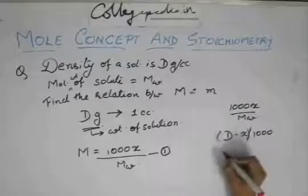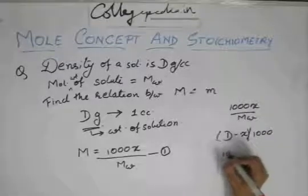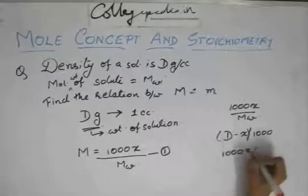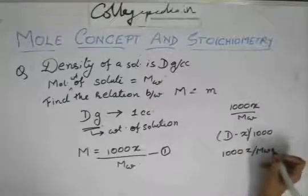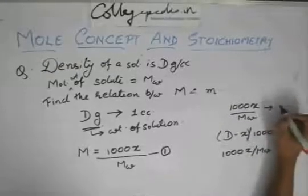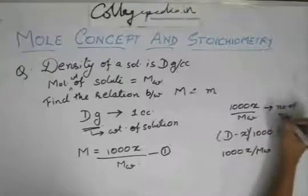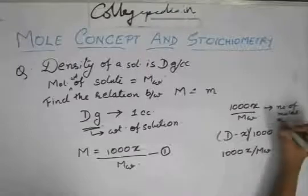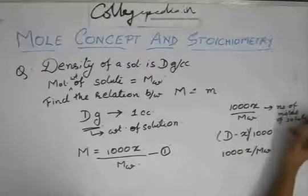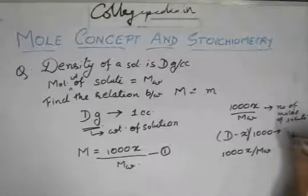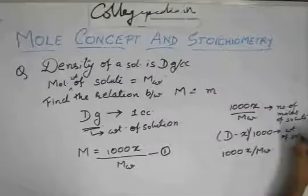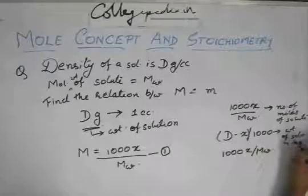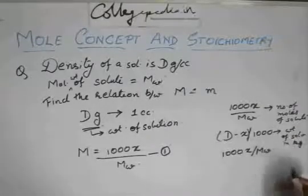So you have 1000x by mw. This is the number of moles of solute and this is the weight of solvent in kg. So if you divide this, you will get molality.